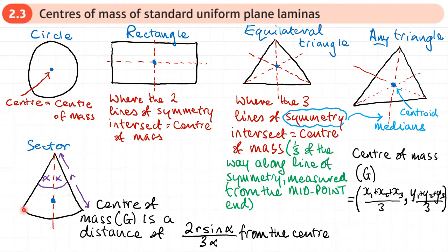The last shape is a uniform sector of a circle. If we draw in a line of symmetry splitting the full angle into two equal parts, each part called alpha, with radius r, then the center of mass G is along this line of symmetry. The distance of the center of mass from the center of the circle is 2r·sin(α) / (3α). Note that alpha must be in radians. So if you're given the full angle, divide it by two first.